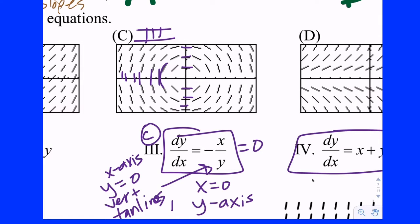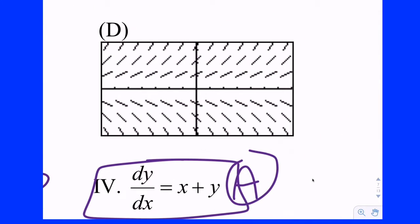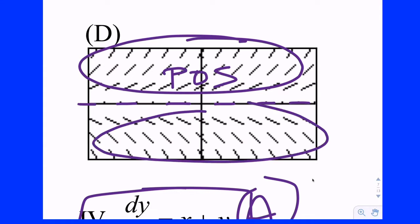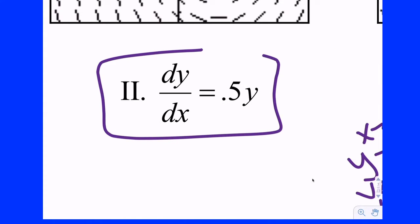That just leaves two more. This next one here is pretty easy to spot. Notice we have along rows what appear to be parallel slopes, which means it doesn't matter what the x value is — the slopes only depend on the y value. So the differential equation would only have a y in it, and it looks like there might be zero slopes right here even though they're not shown. Look for an equation that just has a y in it. When y is positive you have positive slopes, and when y is negative you have negative slopes, so it should be some positive number times y.